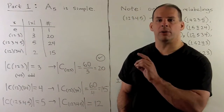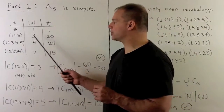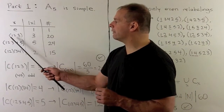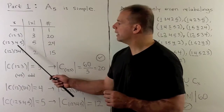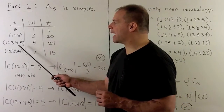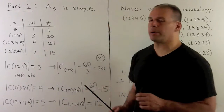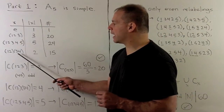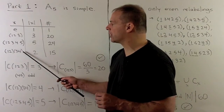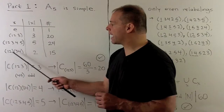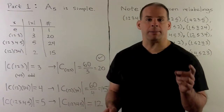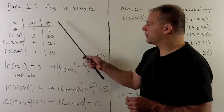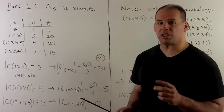To count the number of elements of each type, it's just combinatorics. For three-cycles: 5 × 4 × 3 divided by 3 gives 20. For five-cycles: 5 factorial divided by 5 gives 24. For products of disjoint two-cycles: 5 factorial divided by 2, divided by 2, divided by 2 (to account for swapping the two cycles) gives 15. Taking the sum, we get 60, as expected.